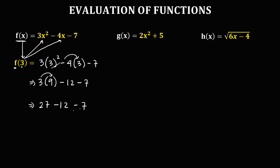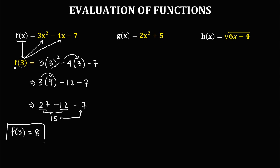Therefore, f of 3: we have 27 minus 12, which is positive 15, and 15 minus 7 equals 8. So therefore, f of 3 is equal to 8.